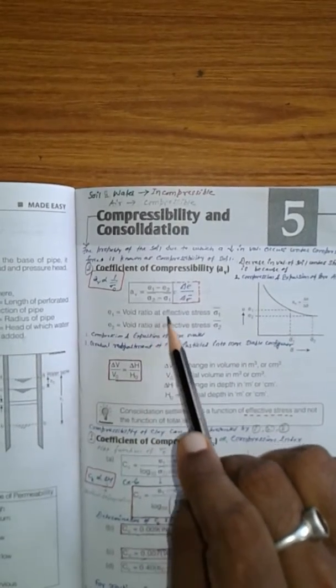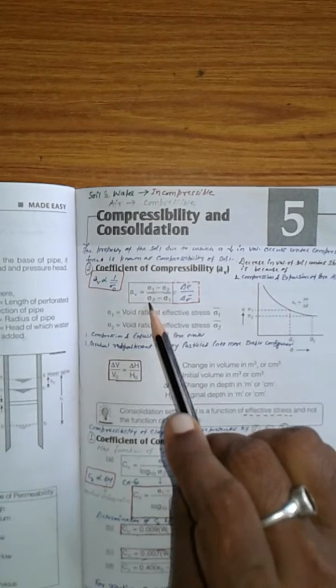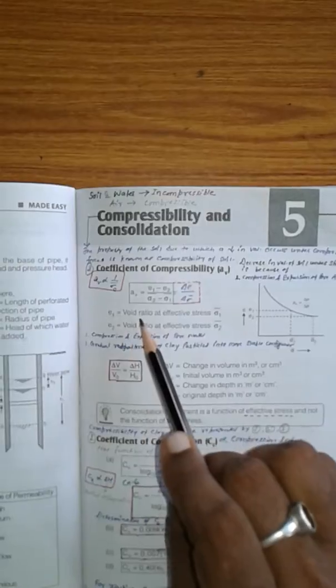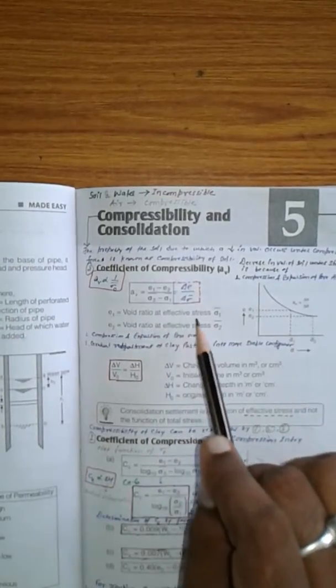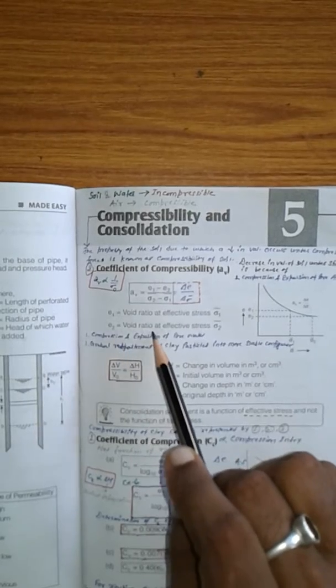That is Av equals E1 minus E2 upon sigma 2 bar minus sigma 1 bar, where E1 is the void ratio at effective stress sigma 1 bar, and E2 is the void ratio at effective stress sigma 2 bar.